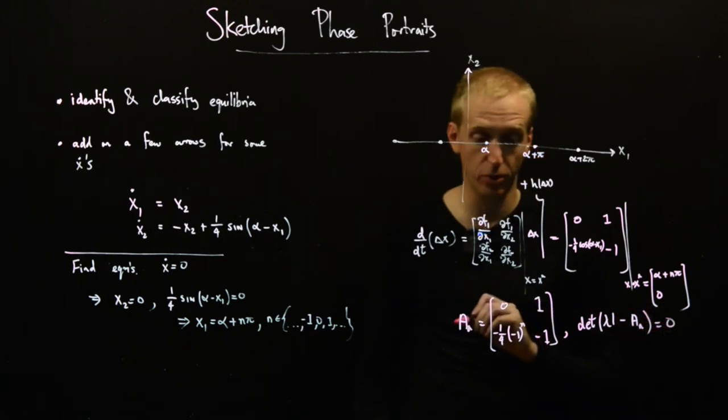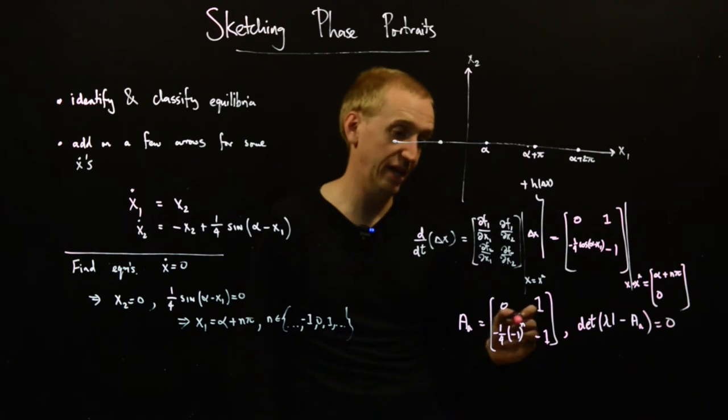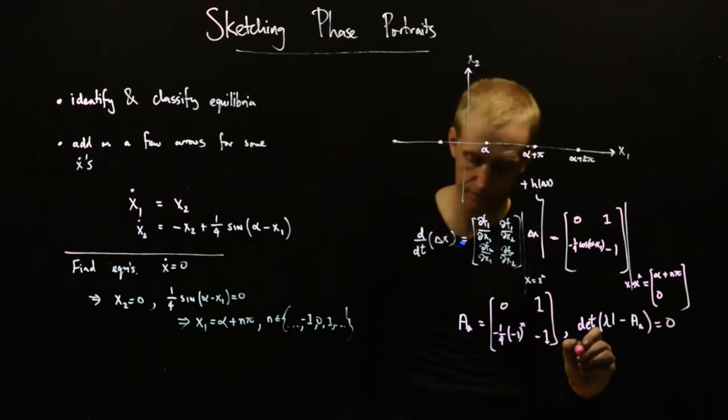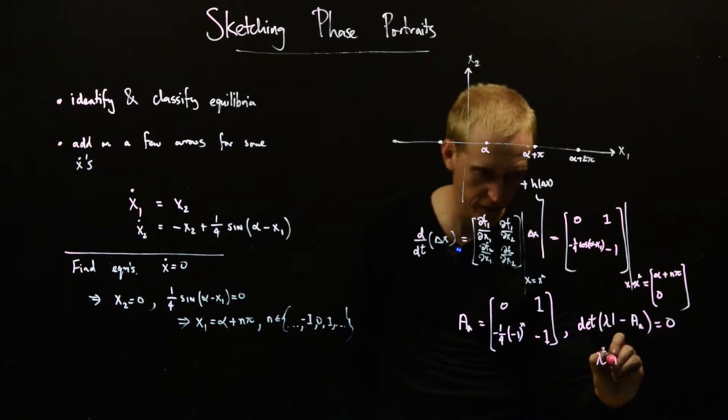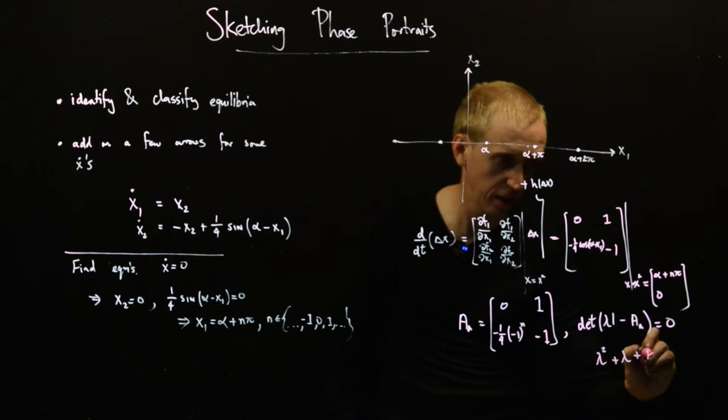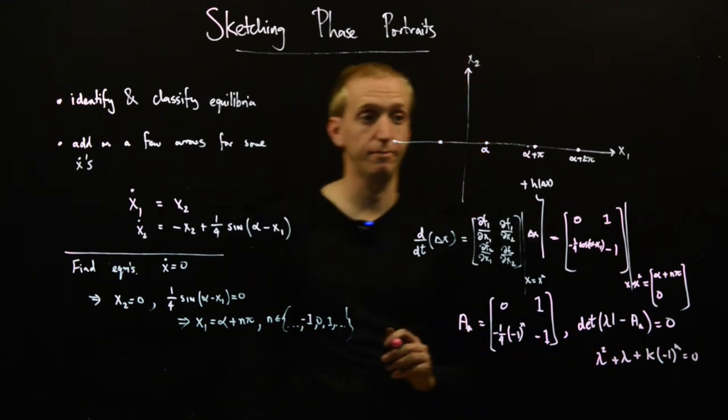Let's put an n here to indicate that this is the linearization around the nth equilibrium point. We want to find solutions to this equation. Well, if we multiply out this determinant, what do we get? We get lambda squared plus lambda plus k times minus one to the n, and are equal to solutions when this thing equals zero.